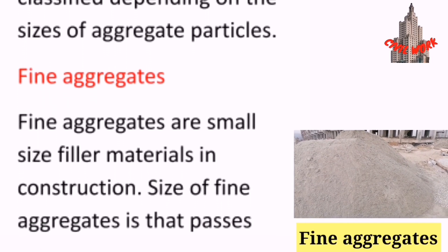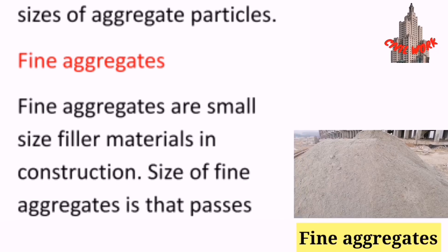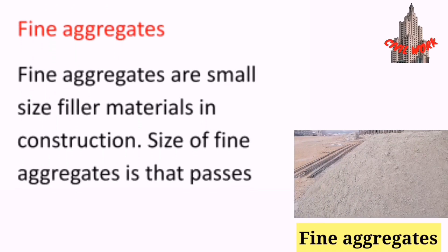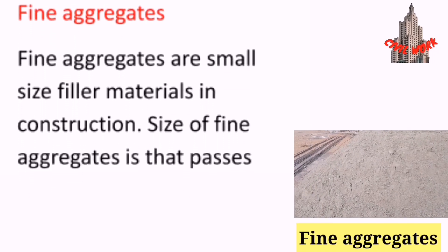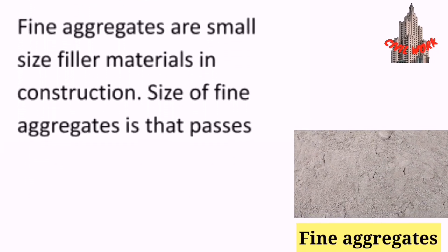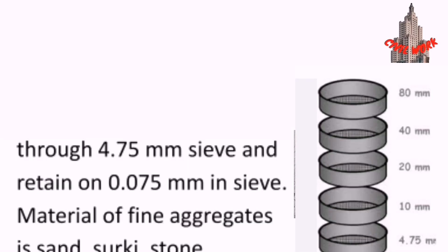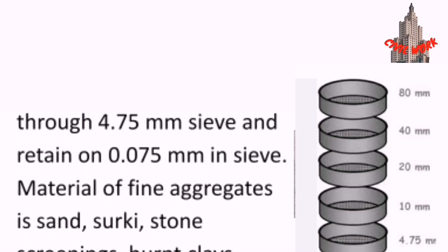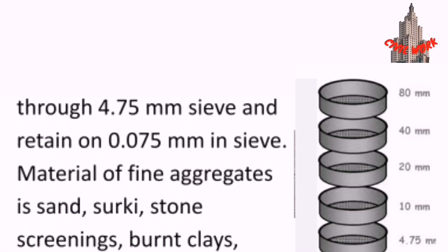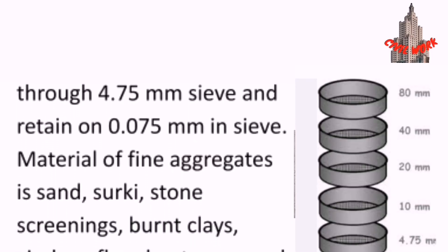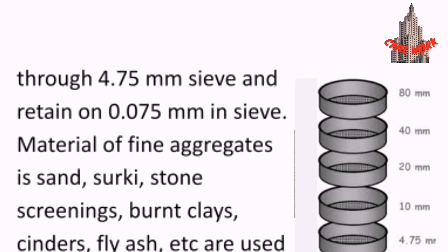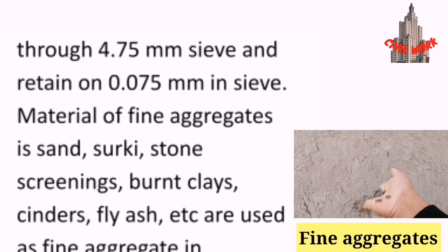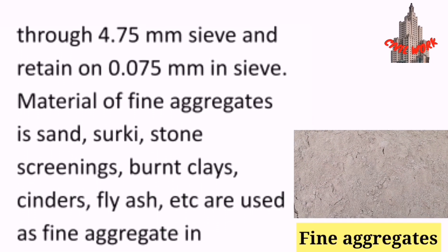Fine aggregates are small size filler materials in construction. The size of fine aggregates is that which passes through a 4.75 mm sieve and is retained on a 0.075 mm sieve.